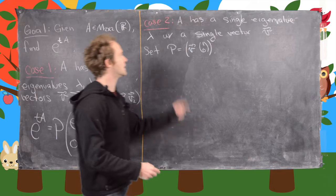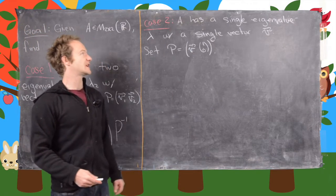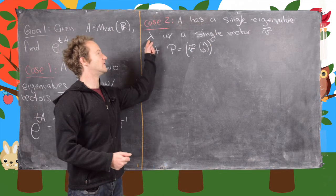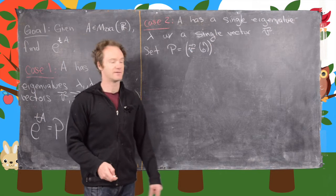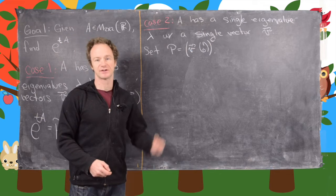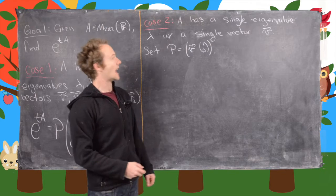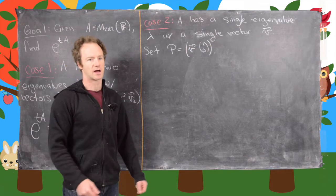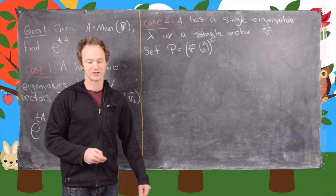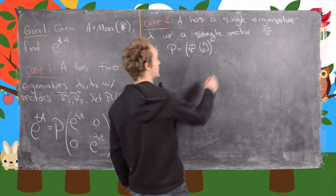What I really want to focus on for this video is this second, more interesting case, which is the case when A is not diagonalizable. So we have a single eigenvalue lambda and a single eigenvector V. We set P equal to this matrix — it's not a diagonalizing matrix, but it puts A into something called a Jordan canonical form. I'll just say that word in case you're interested in looking it up.